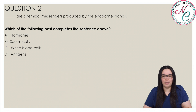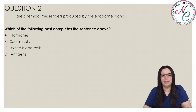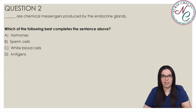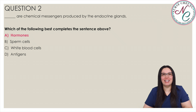Blank are chemical messengers produced by the endocrine glands — which of the following best completes that sentence? Is it A, hormones; B, sperm cells; C, white blood cells; or D, antigens? And the correct answer is A, hormones.